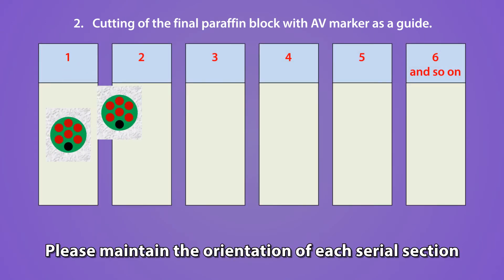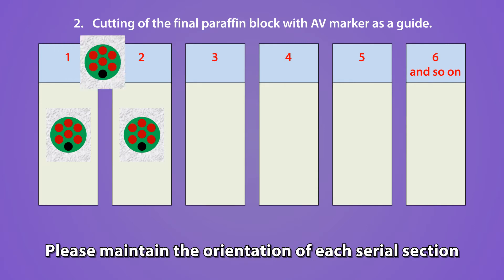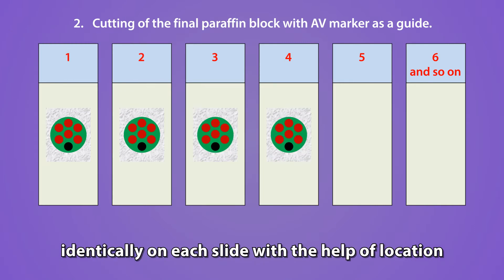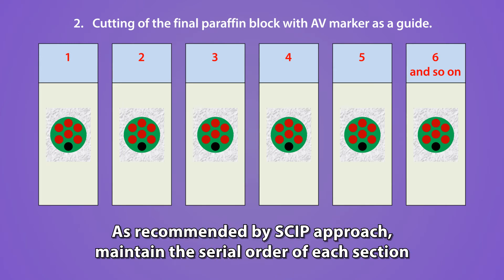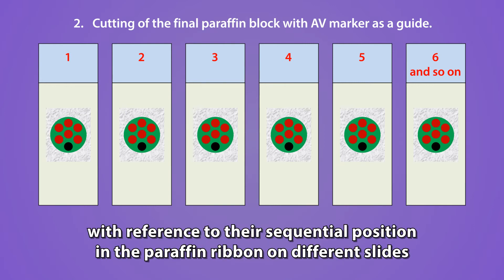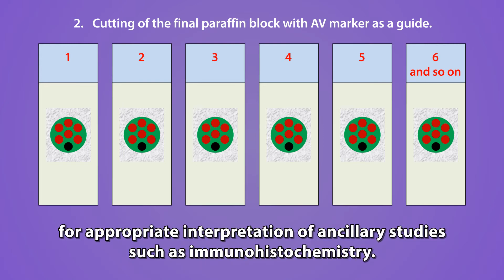Please maintain the orientation of each serial section identically on each slide, with the help of the location of the dark-colored AV marker on the section. As recommended by the SEIP approach, maintain the serial order of each section with reference to their sequential position in the paraffin ribbon on different slides, for appropriate interpretation of ancillary studies such as immunohistochemistry.